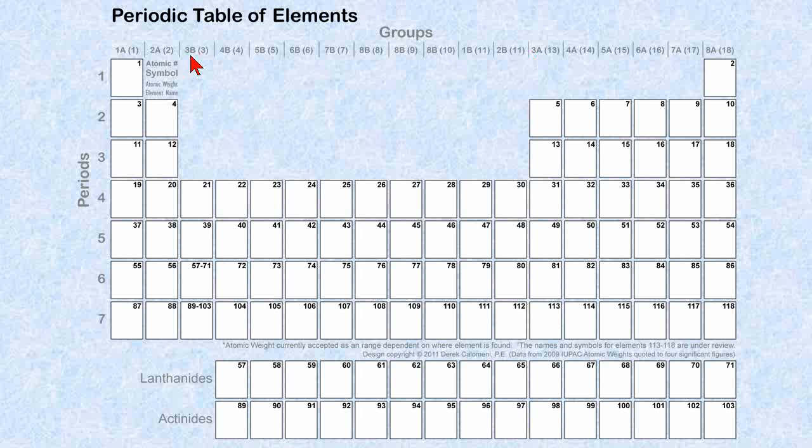And there's a number next to it because there's a couple different ways of defining groups. In this class we'll be using the 1 and 2As all the way through 8A, and then 1B all the way through 8B. Let's move to the next slide.